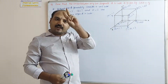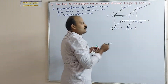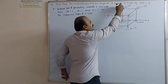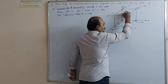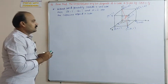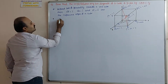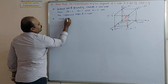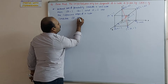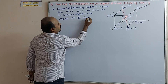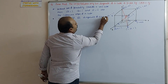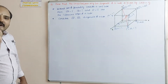From the cube, we have to select any two diagonals. I am now considering the two diagonals OP and BE. The angle between them is theta. We have to write the vectors of these diagonals.